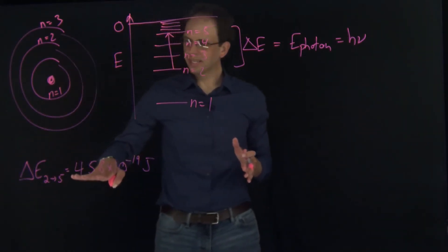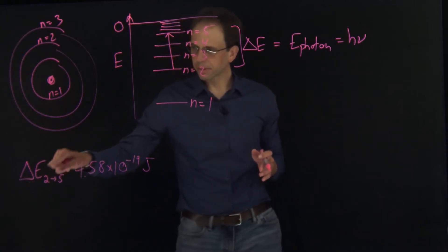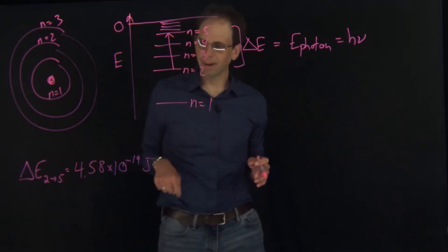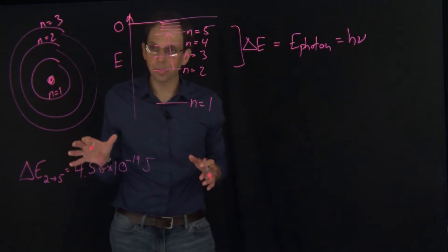Now that I've cleared the board, in the last slide we just computed that the delta E for the n equals 2 to 5 transition is 4.58 times 10 to the minus 19 joules.